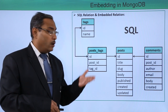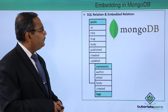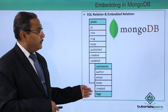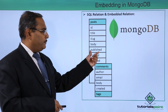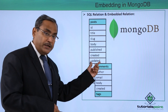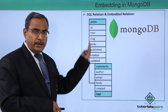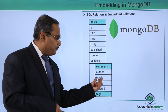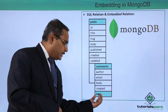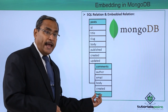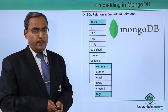Now, how can we represent the same structure using an embedded relation in MongoDB? Consider this example. We have post id, title, slug, body, published, created, and updated. Then another document is embedded in this parent document — the comments, with fields: author, email, body, and created. And another document is embedded here for the tags. So this is the embedded relation representation in MongoDB.